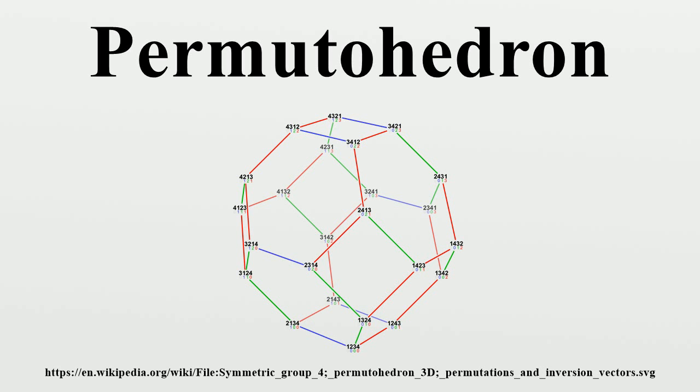This Cayley graph is Hamiltonian. A Hamiltonian cycle may be found by the Steinhaus-Johnson-Trotter algorithm.